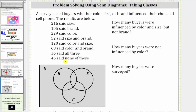At the bottom, we're told 46 said none of these, and therefore there are 46 buyers in the universal set but not in set B, set S, or set C — so there are 46 buyers in this region here. Next, 36 said all three, which means there are 36 buyers in the intersection of the three sets, this region here, influenced by all three.